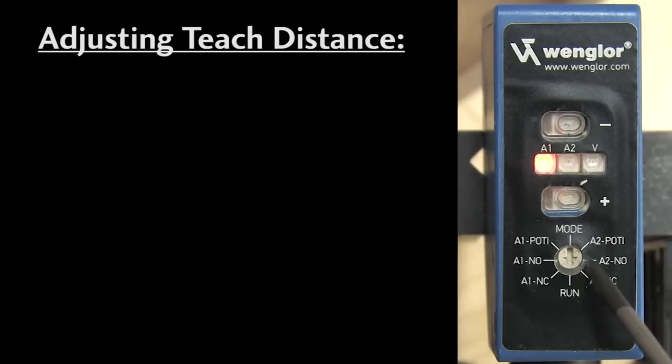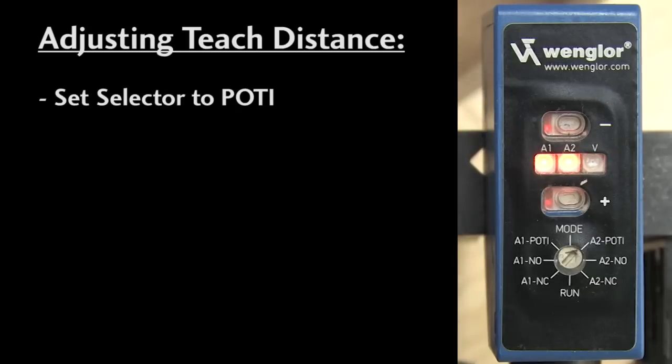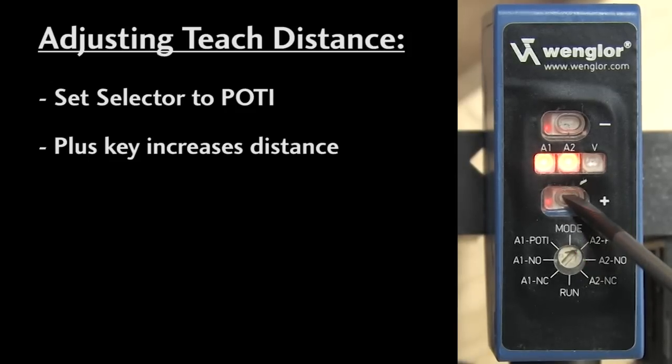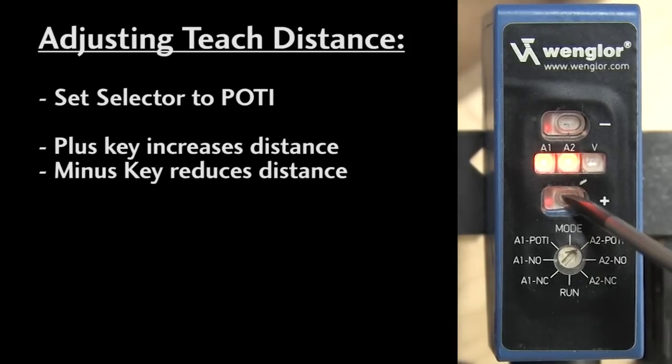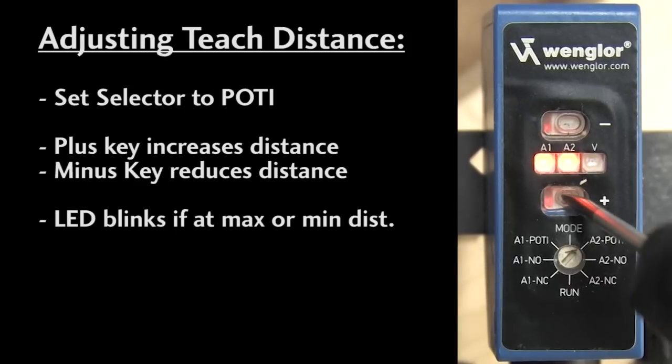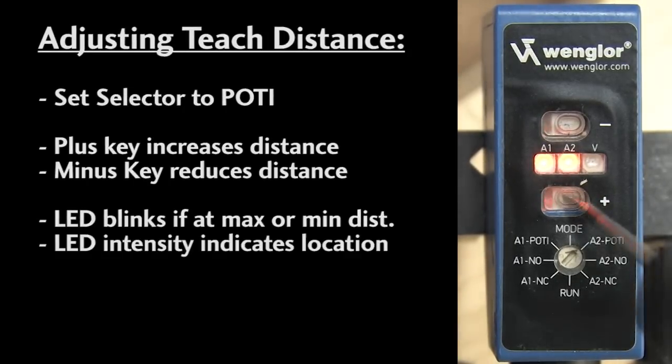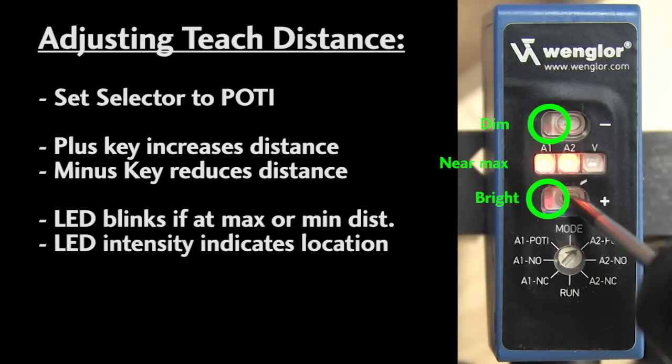Suppose you want to modify the detection point that you taught for an object in foreground or background mode. Just set the selector to the potentiometer setting for the output you want to adjust. That would be A2 in our case since that's the one that was set to foreground background mode. The plus key increases the distance, the minus key reduces the distance. If you hit the max or min distance, the corresponding LED will blink. And just like in window mode, the LED's brightness changes to indicate where you are in the range. I've found there's about 160 button presses to get from the max to the min. You can also just hold the button in and it will move the detection point. It took mine about 30 seconds to traverse the entire range from min to max.